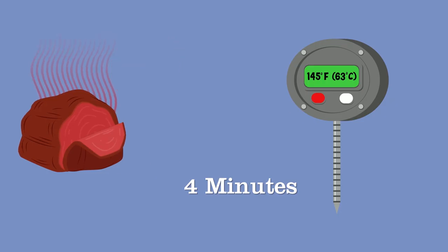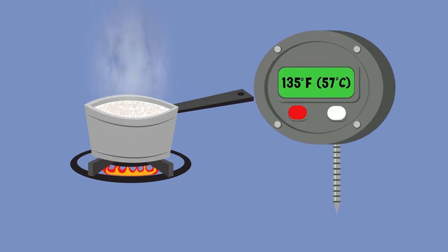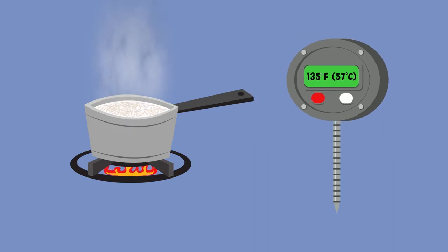And finally, fruit, vegetables, grains including rice and pasta, and legumes including beans or refried beans that will be hot held for service must reach a temperature of 135 degrees Fahrenheit (57 degrees Celsius). Refried beans. Alright, there was a whole lot of numbers.